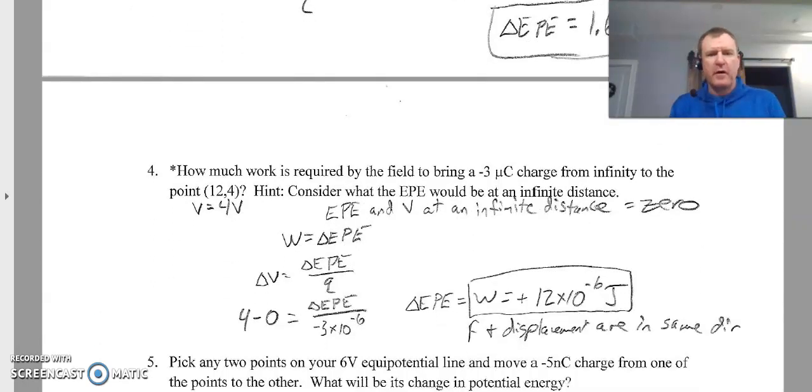How much work required by the field to bring a negative 3 microcoulomb charge from infinity to this point? Consider what the potential energy would be at an infinite distance. Well, if you have a charge an infinite distance away, it really is not affected by what's going on on that electric field that you created. So at an infinite distance away, the electric potential energy, and for that matter the electric potential, are going to be zero. So that's a key concept to recognize there. And then I interpolated the data to get, at that point, I got a potential of 4 volts.